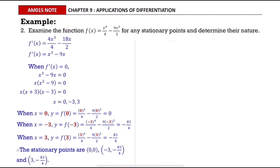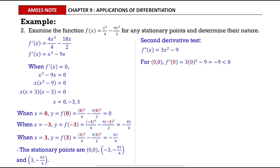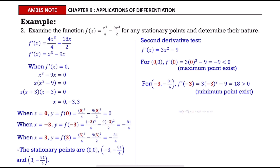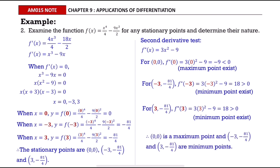Since we use the second derivative test, find the second derivative by differentiating the first derivative. Then test the point (0, 0) by substituting 0 into the second derivative function, and we get -9, which is less than 0, so a maximum point exists. Then test the other two points as well. We can conclude that (0, 0) is a maximum point and the other two points are minimum points.